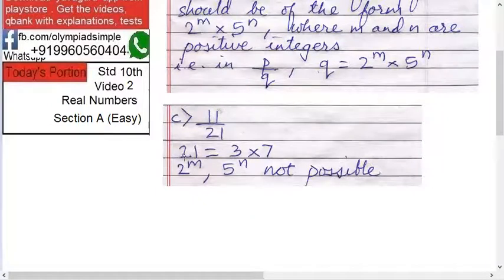Next is 11 upon 21. Again, 21 is 3 times 7. 2 raised to m is not possible. 5 raised to n is not possible. So non-terminating.